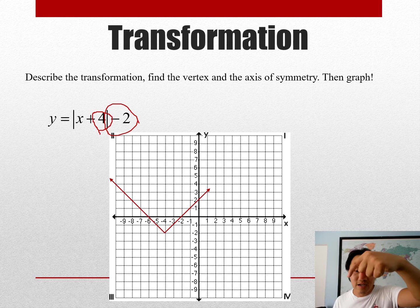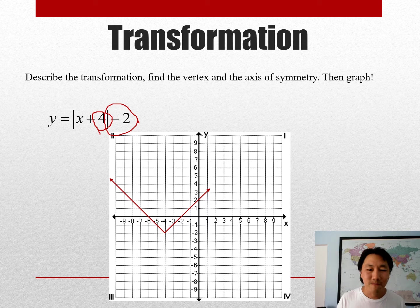And here's what it looks like. There it is, so it's moved left 4 and then down 2, but it still goes up. It still opens up like a V. All right, not too bad.